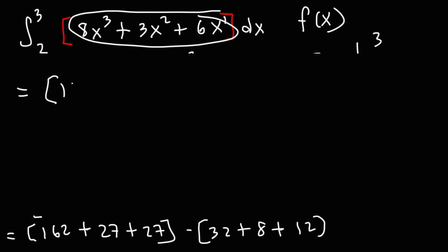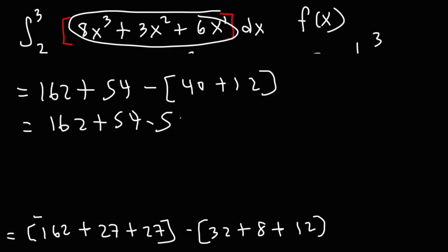27 plus 27, we no longer need the brackets anymore. 27 plus 27 is 54. 32 plus 8 is 40. And 40 plus 12 is 52. So this is minus 52. 54 minus 52 is 2. 162 plus 2 is 164. So this is the value of the definite integral.